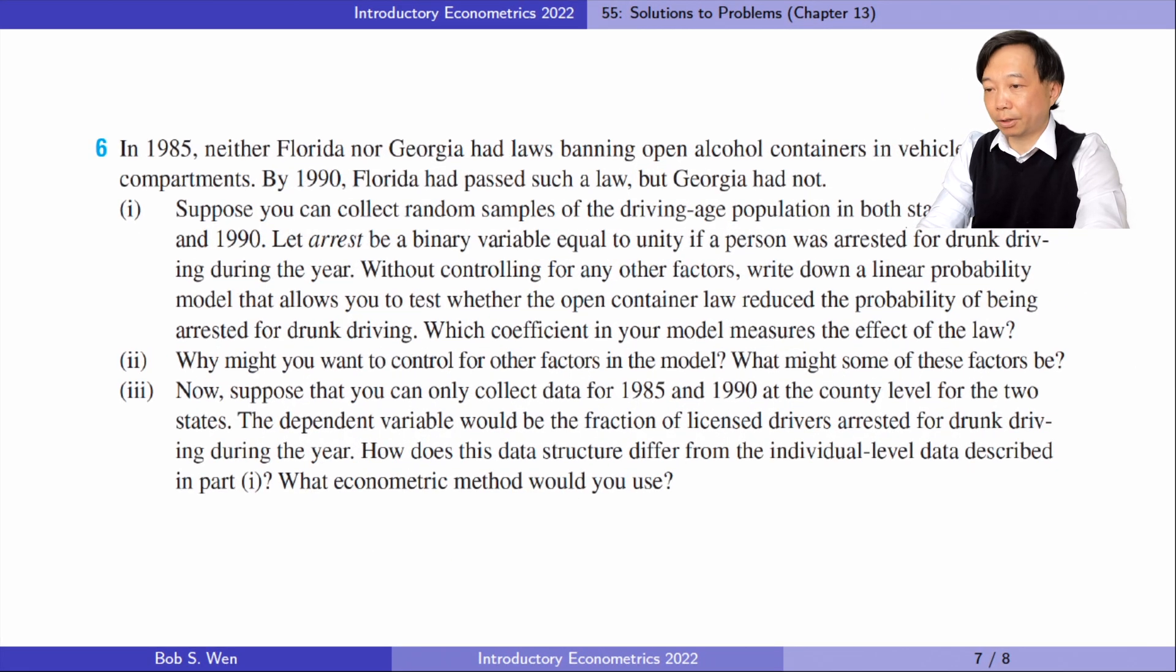Let's find answers to problem 6. In 1985, neither Florida nor Georgia had laws banning open alcohol containers in vehicle passenger compartments. By 1990, Florida had passed such a law, but Georgia had not. In part 1, suppose you can collect random samples of the driving age population in both states for 1985 and 1990. Let arrest be a binary variable equal to unity if a person was arrested for drunk driving during that year. Without controlling for any other factors, write down a linear probability model that allows you to test whether the open container law reduced the probability of being arrested for drunk driving. Which coefficient on the model measures the effect of the law?